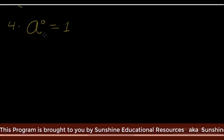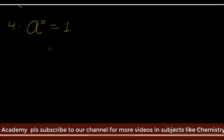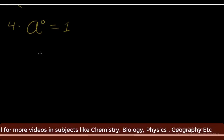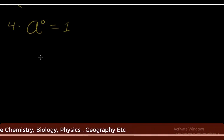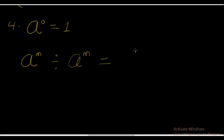Rule number 4, the simplest of them all: A raised to the power 0 is equal to 1. Anything raised to the power 0 is equal to 1. How do you come about circumstances of A raised to the power 0? Take for example A raised to the power M divided by A raised to the power M. Following the laws of indices, this becomes A raised to the power M minus M, which is A raised to the power 0, and this is equal to 1.